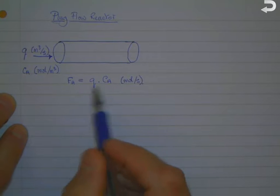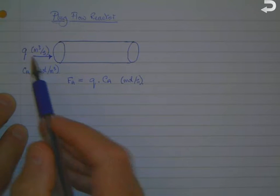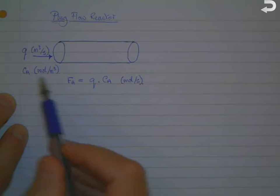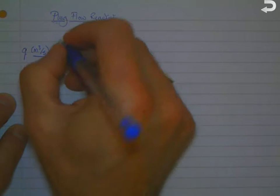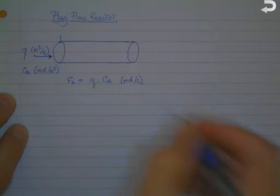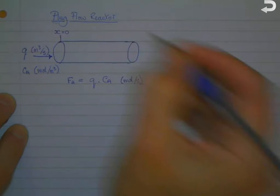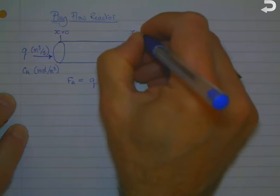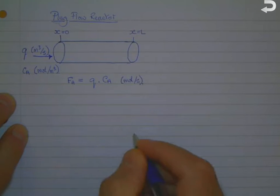While q is constant across the tube, Ca and therefore Fa will vary with distance along here. We're going to consider the distance traveled as x, so we've got the inlet at x equals zero and at the outlet x equals L, which is the length of the tube.